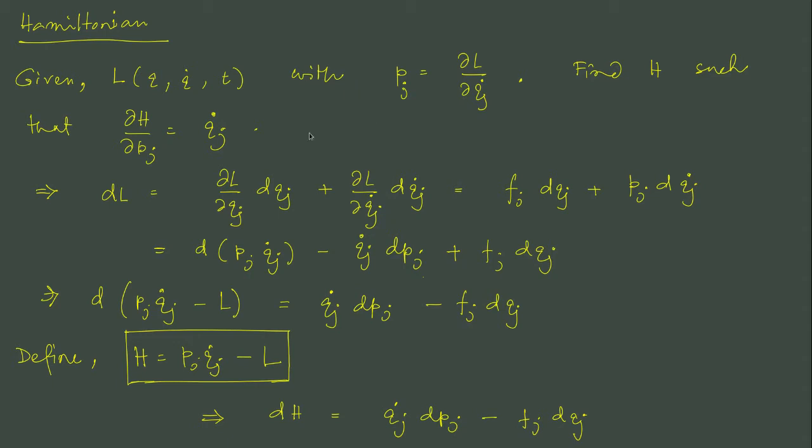Now to construct the Hamiltonian from the Lagrangian, we ask a very similar question. So given L function of q's and q dots and t in general, and with pj equal to del L del qj dot, find Hamiltonian h, a function such that del h del pj is equal to qj dot.